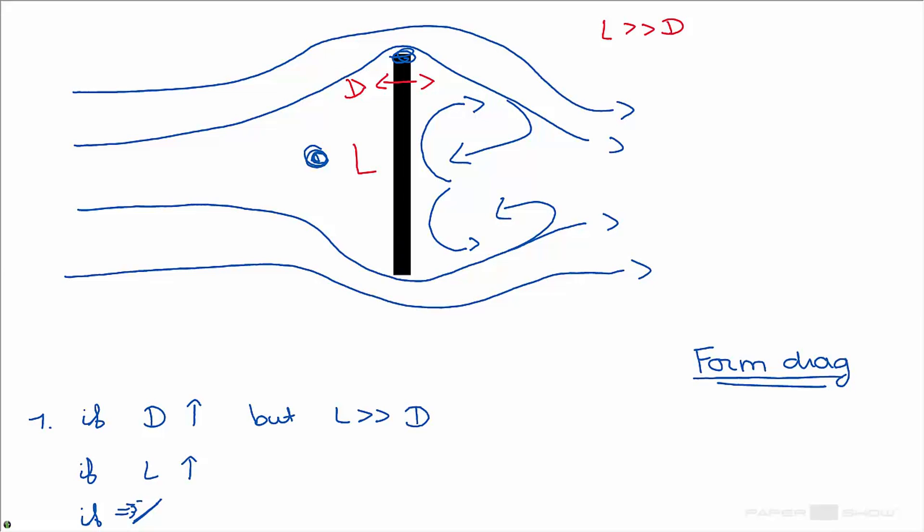The form drag would not be the same since this stagnation point and this area over here would still be the same. So nothing happens in this case with the form drag. Overall drag increases but not the form drag.